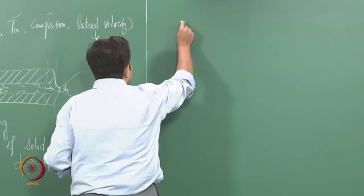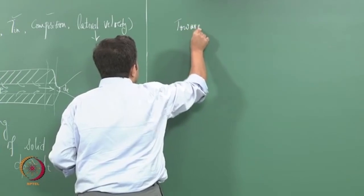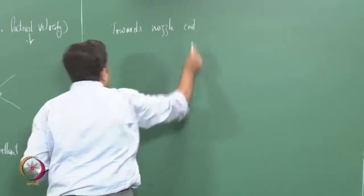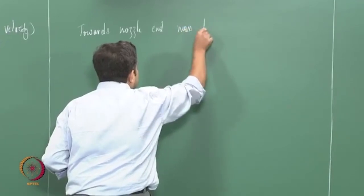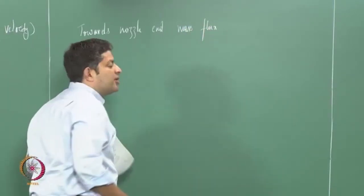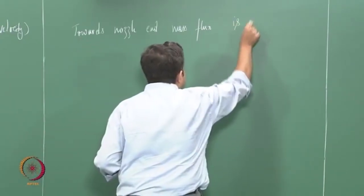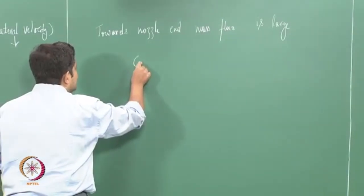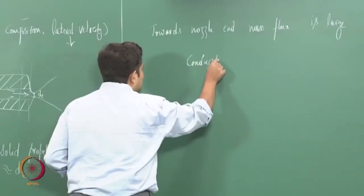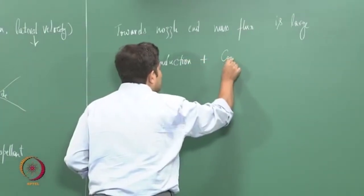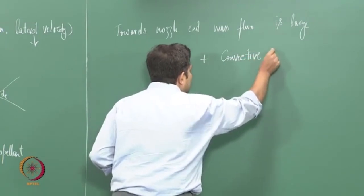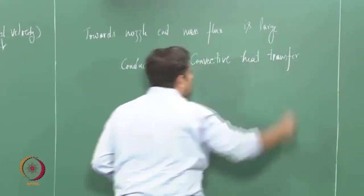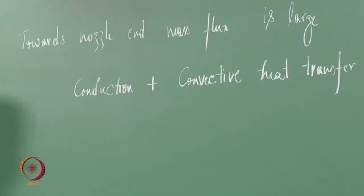Towards the nozzle end, mass flux — that is, mass flow rate per unit area — is large. Due to this, in addition to conduction heat transfer you will also have convective heat transfer. Convective heat transfer leads to higher heat transfer to the propellant and therefore higher burn rate.